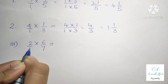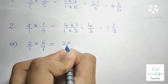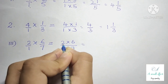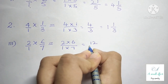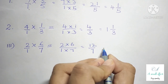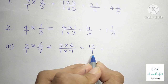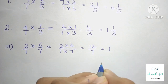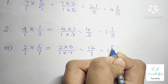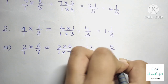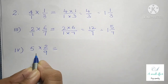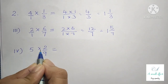We multiply the numerator with the numerator and denominator with the denominator, so 2 into 6 is 12 by 7. It can't be reduced to lowest form, so we write it as a mixed fraction. 7 ones are 7, so 12 minus 7 is 5, and the denominator is 7. So our answer is 1 whole 5 by 7.